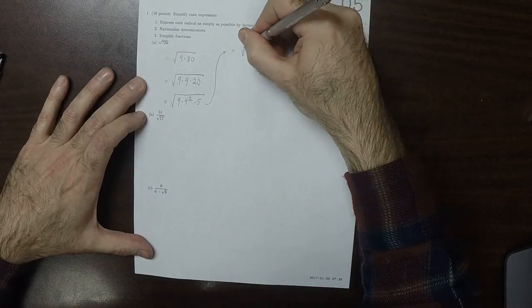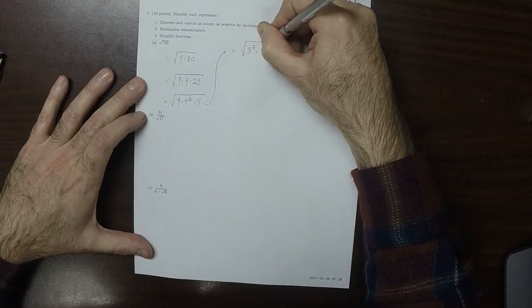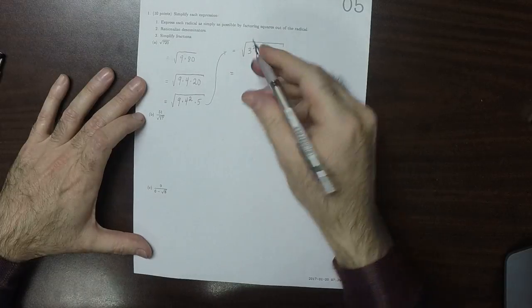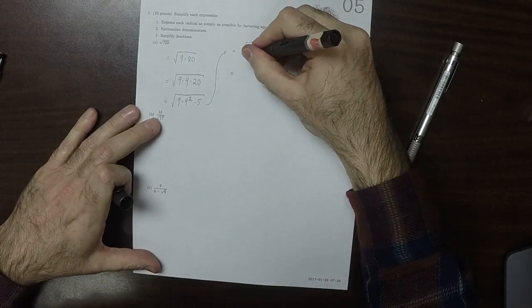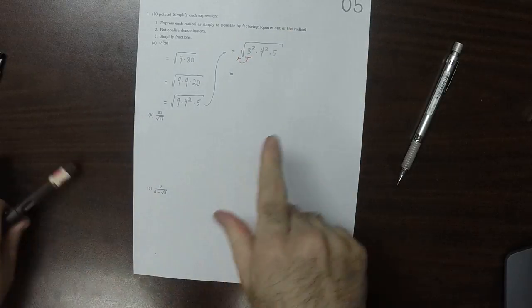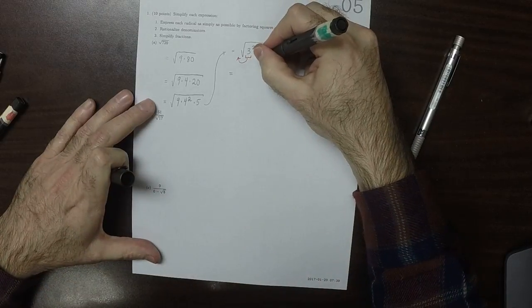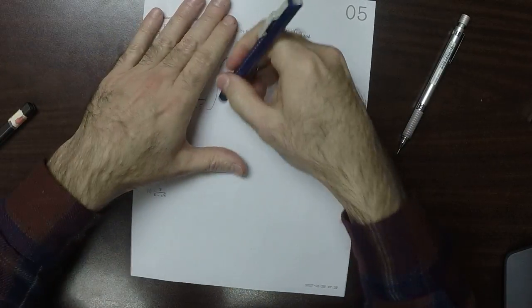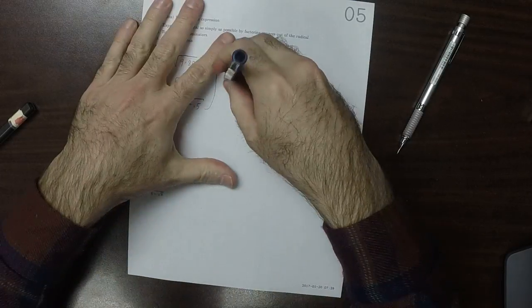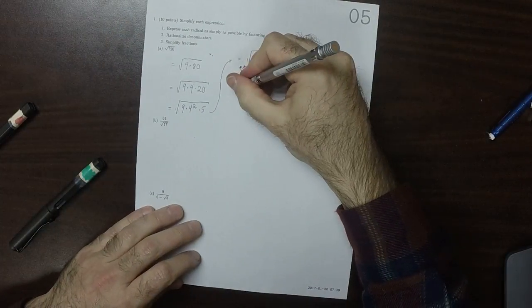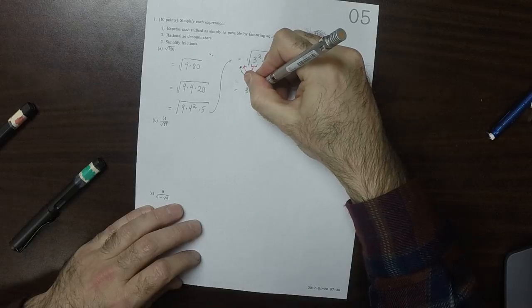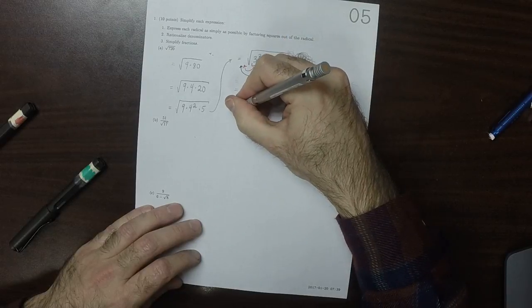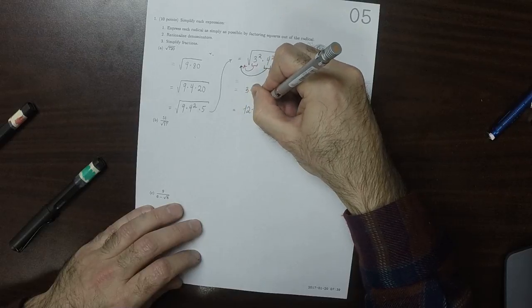So that would be square root of 3 squared, because that's 9, times 4 squared times 5. So now the 3 can come out of the square root. Because the 3 squared comes out as 3, the 4 squared comes out as 4. So we get 3 multiplied by 4 multiplied by square root 5. So that would be 12 times the square root of 5.